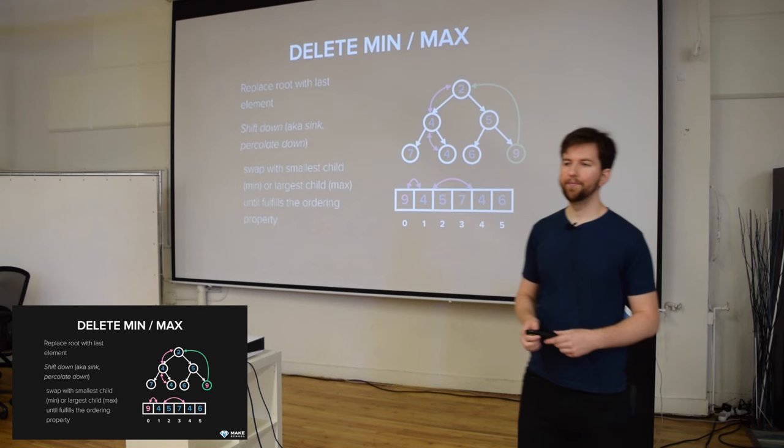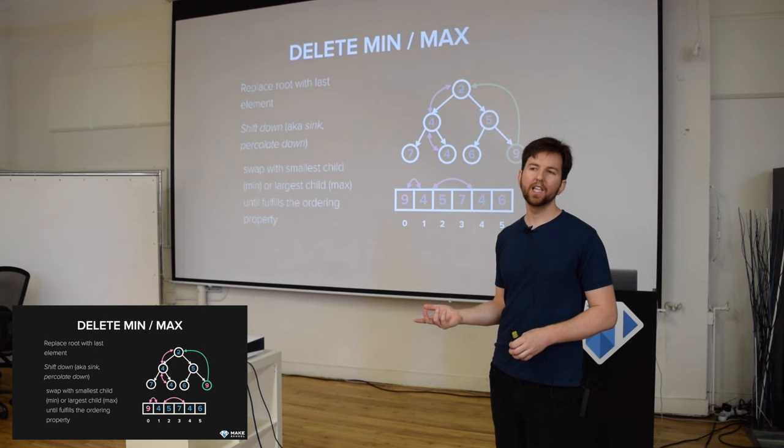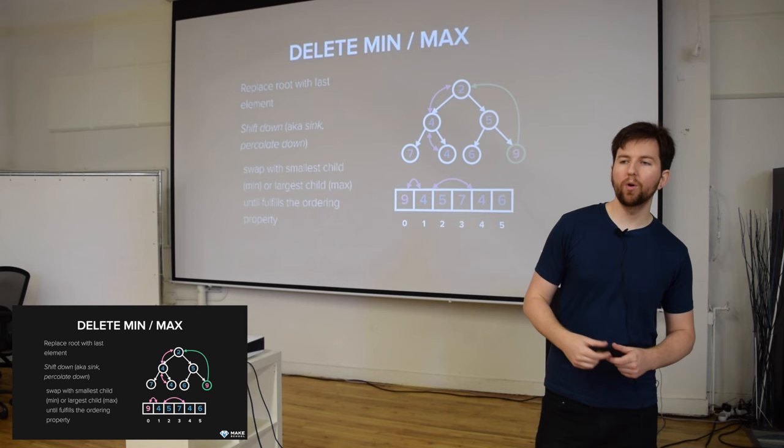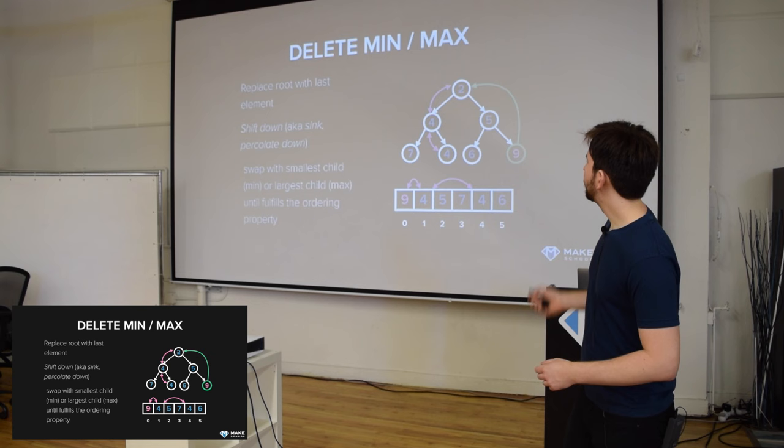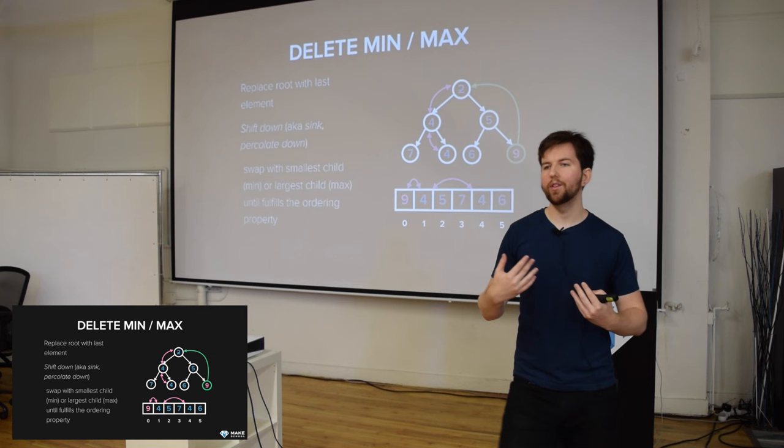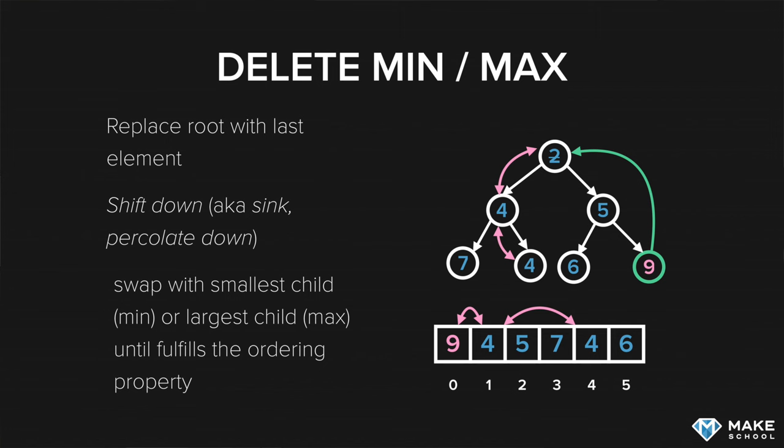How about delete? In general, with heaps, you only insert things or do things with the root node. So it's a priority queue for a reason — we can only grab out the item with the most priority, whether it be the minimum item or the maximum item. When you call delete, it's normally called delete-min or delete-max, and it can only delete the root node.